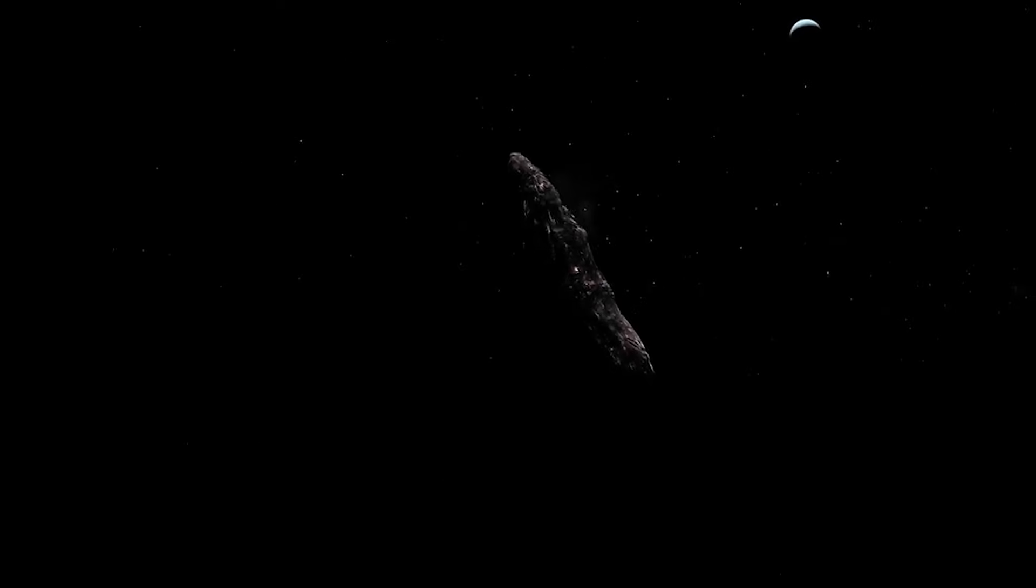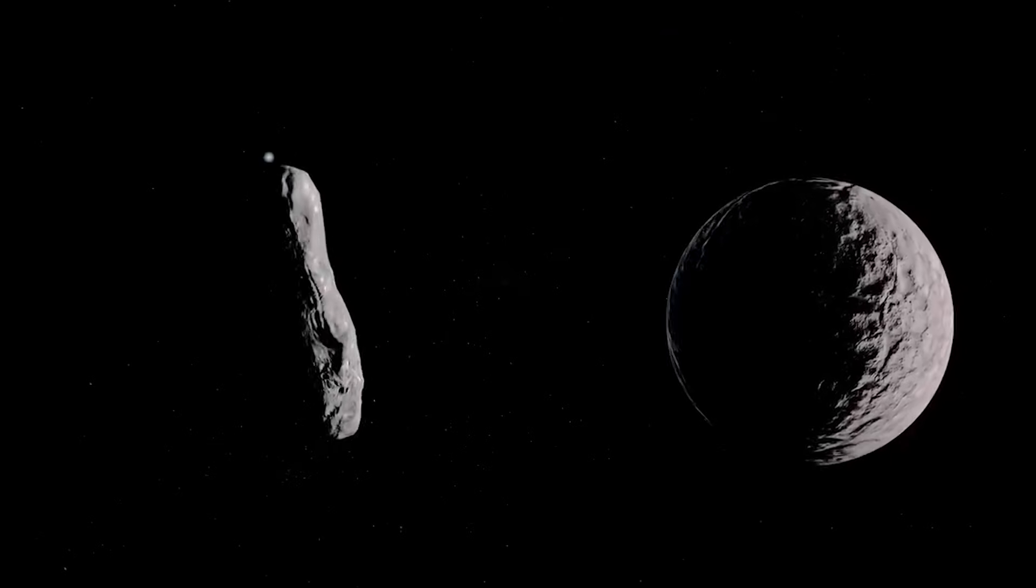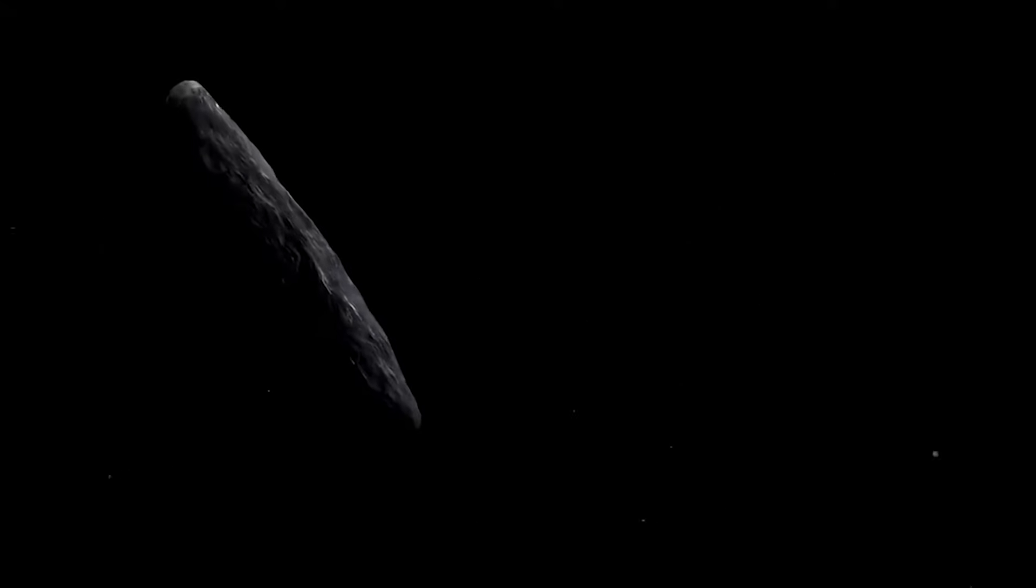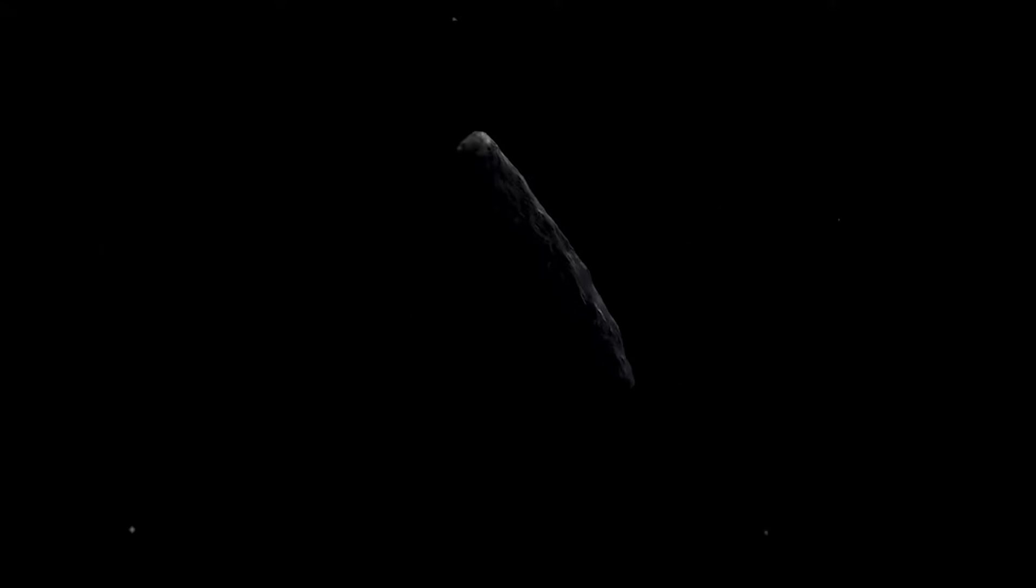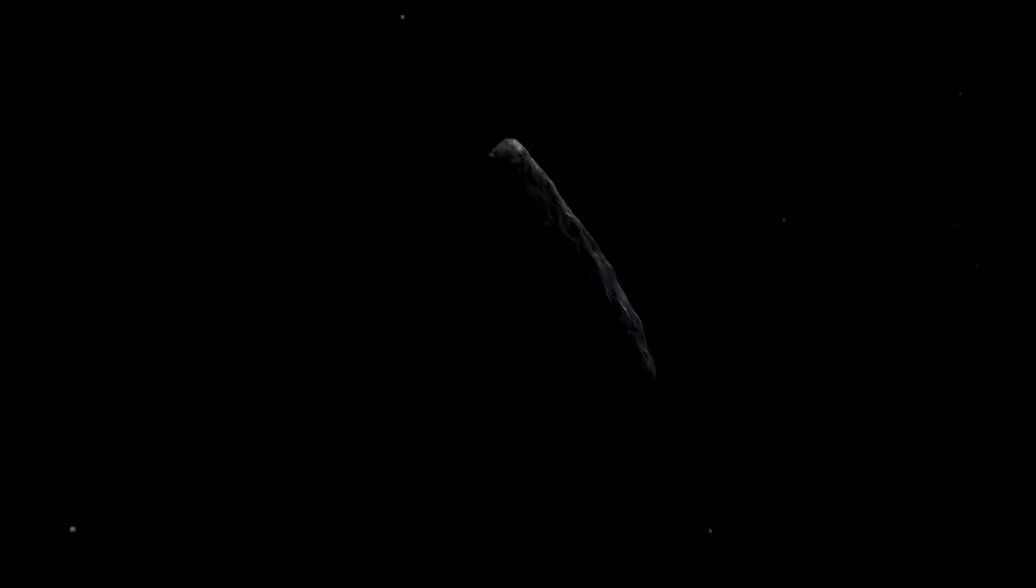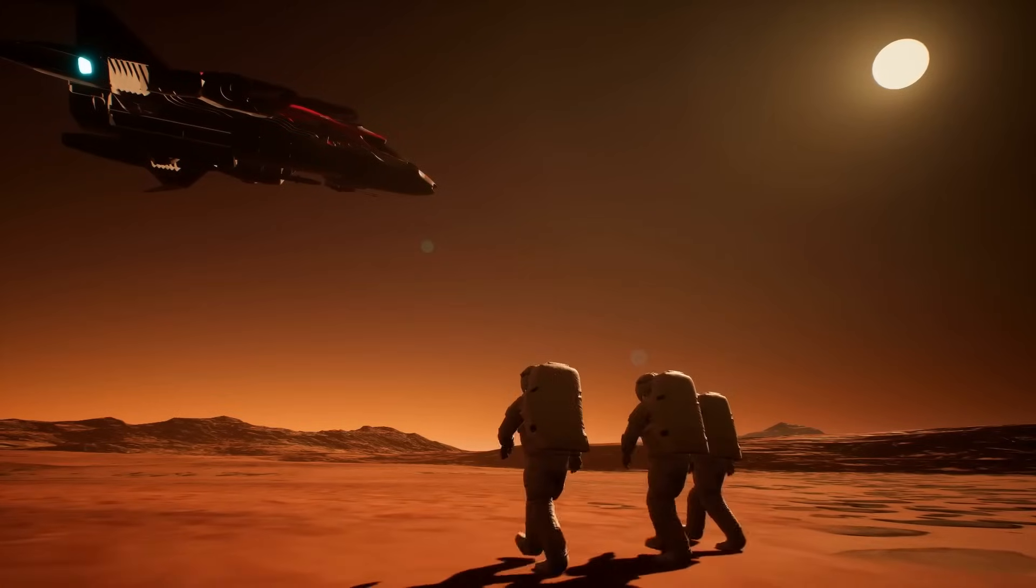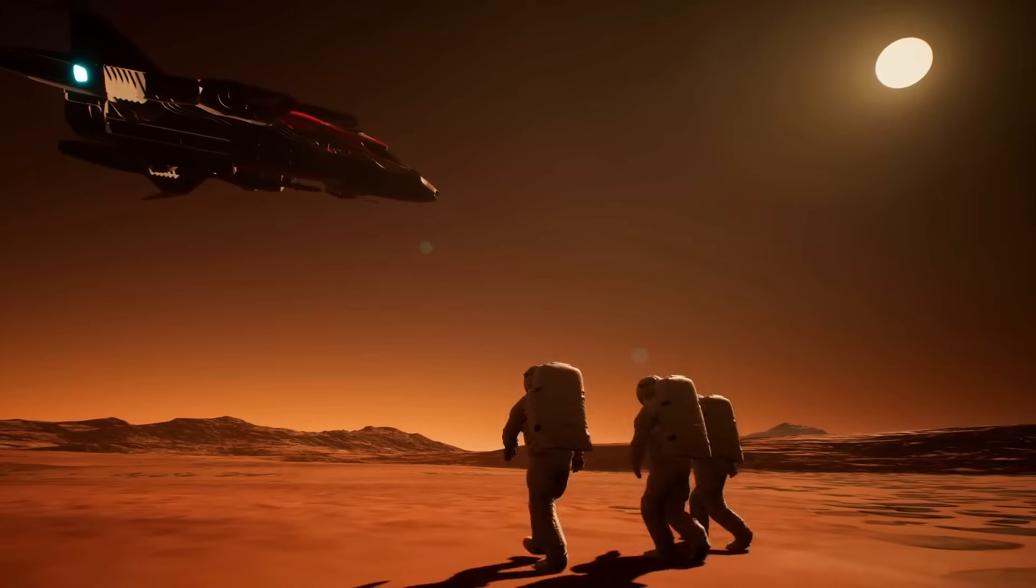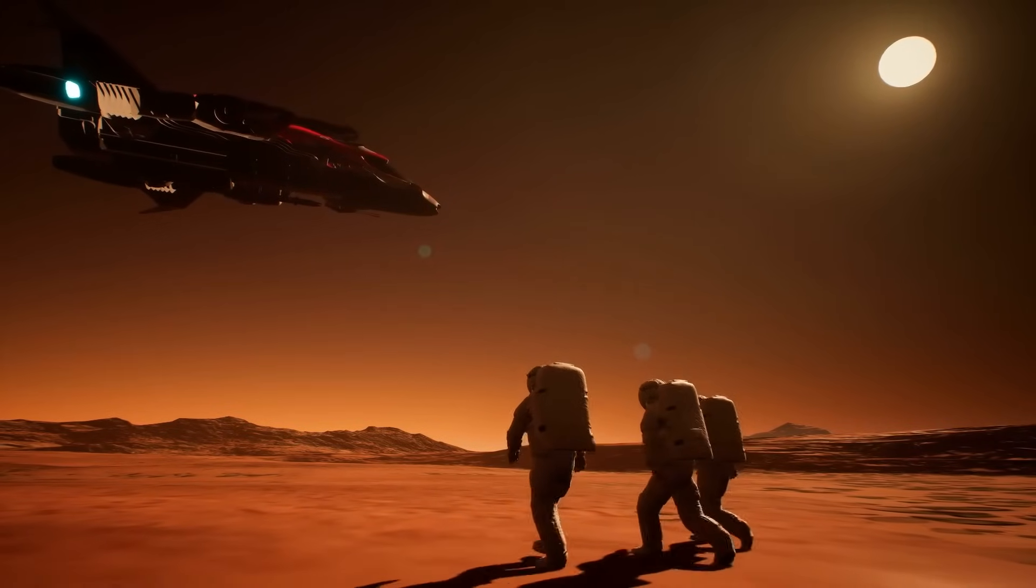The public is fascinated by the notion that 'Oumuamua might be an extraterrestrial probe, which is another theory. There were rumors that it might be an artificial object because of its peculiar trajectory and lengthy cigar-shaped shape. As Harvard scientist Avi Loeb proposed that 'Oumuamua might be a thin, flat, nearly rectangular piece of material that is a probe sent by an intelligent civilization, this notion began to take shape.